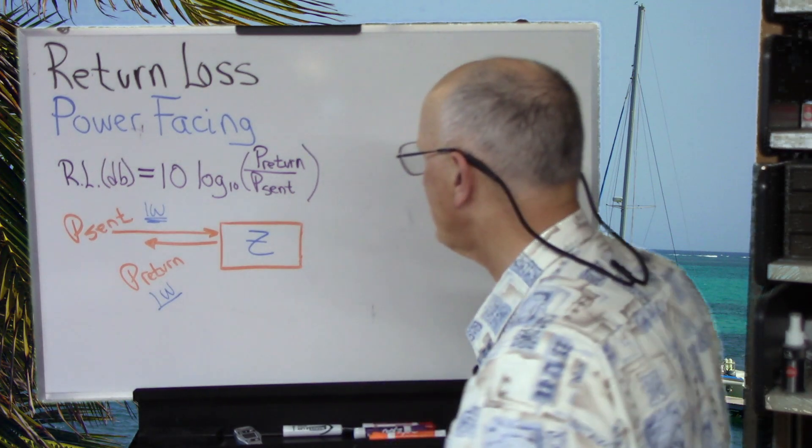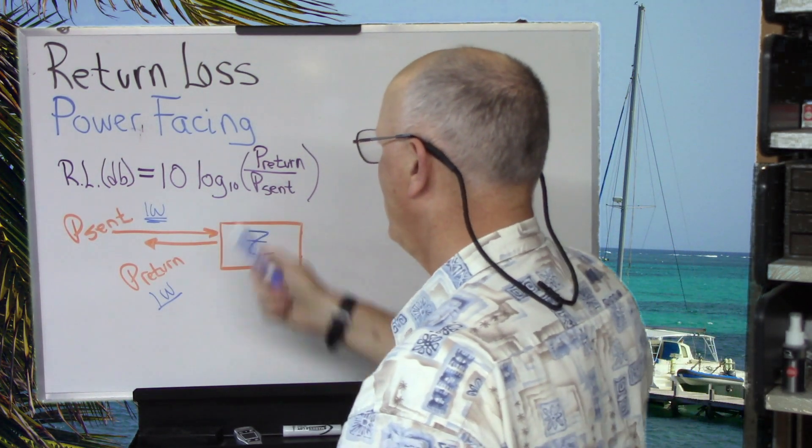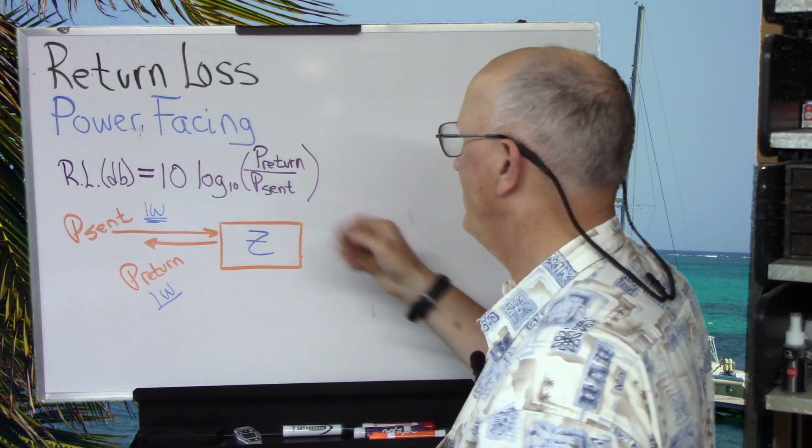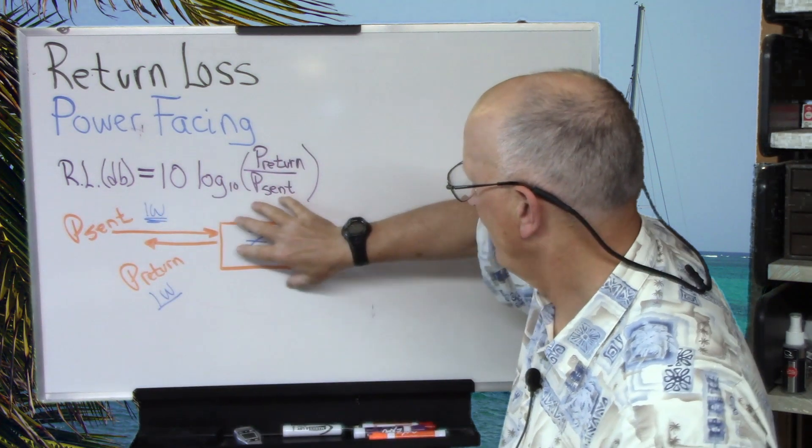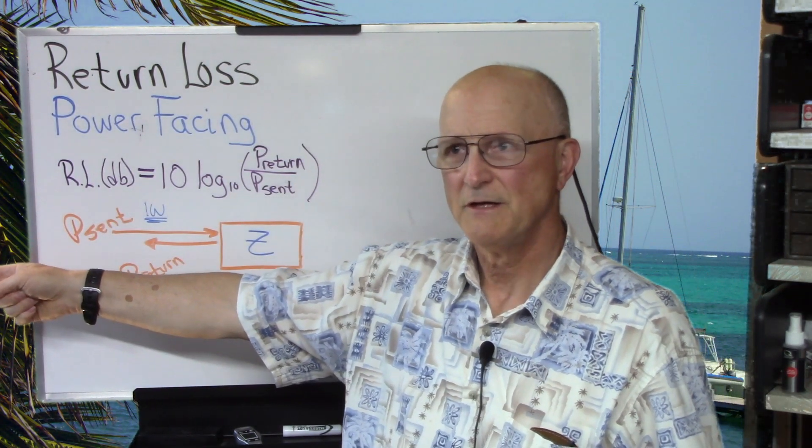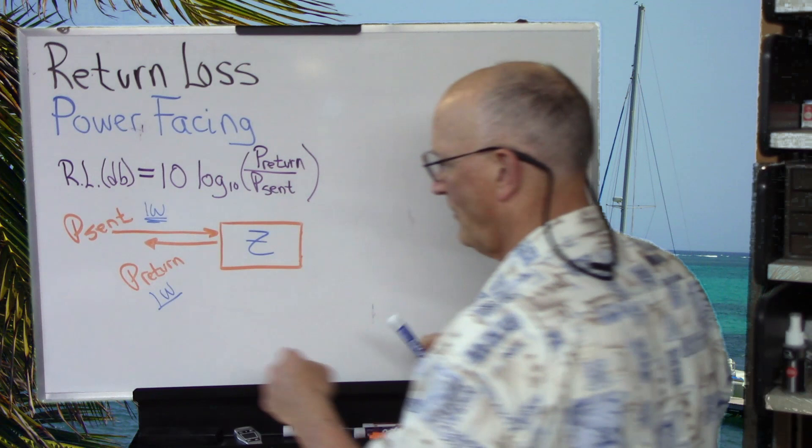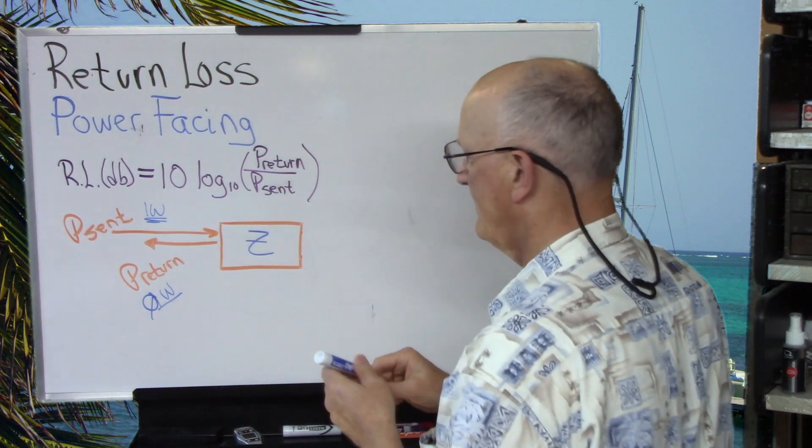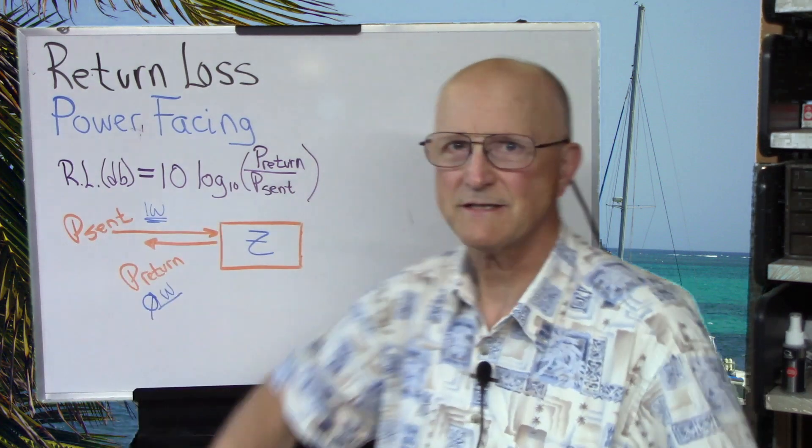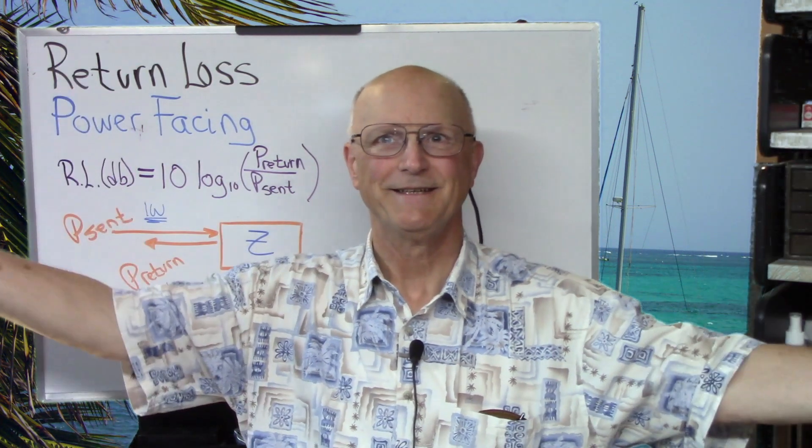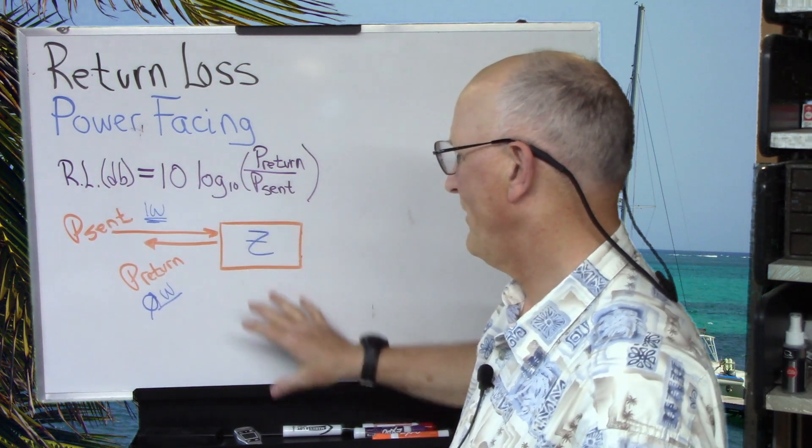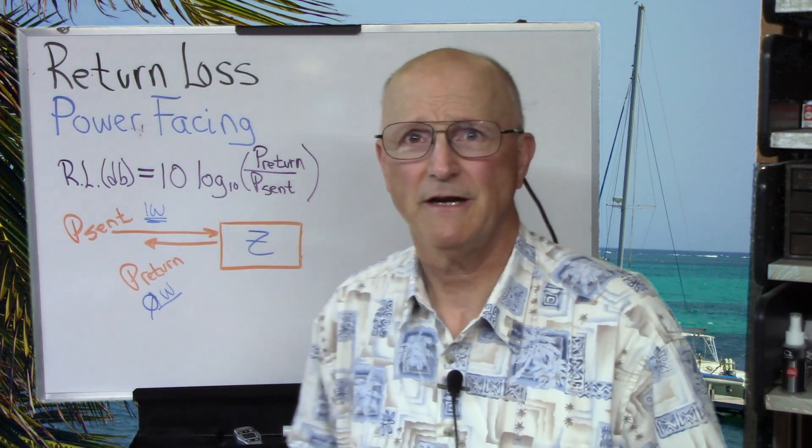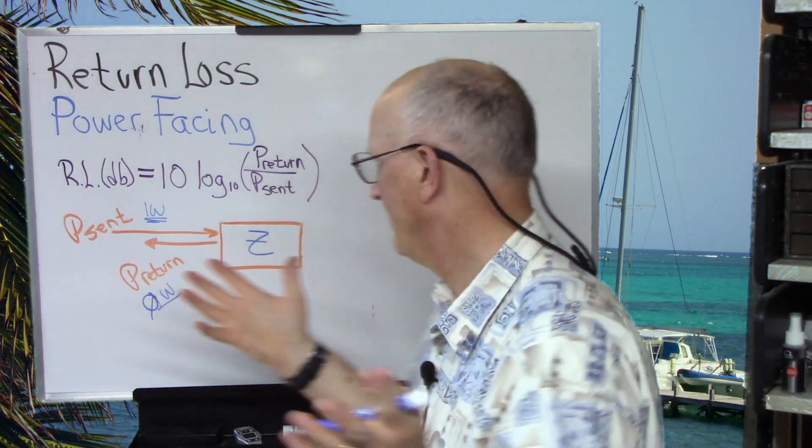Now, as you can probably guess, the larger the return loss, the better the load is. Because more power is being absorbed and less power is being reflected back. So, if you have a perfect load here, and instead of getting one watt back, you get zero watts back, well then, the return loss is going to be minus infinity. It's going to be an infinite number. Because the log of zero is infinity. And 10 times infinity is infinity. Go figure.